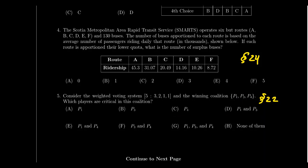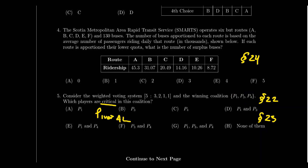A variant of Question 5 might ask about pivotal players from Lesson 23, instead of critical players. For pivotal players, you need an ordered sequence — there's a first, second, third player in line. The pivotal player is the person in the sequence who tips the coalition over the quota. There can only be one pivotal player per sequence. Be prepared to determine critical players and pivotal players given various coalitions.